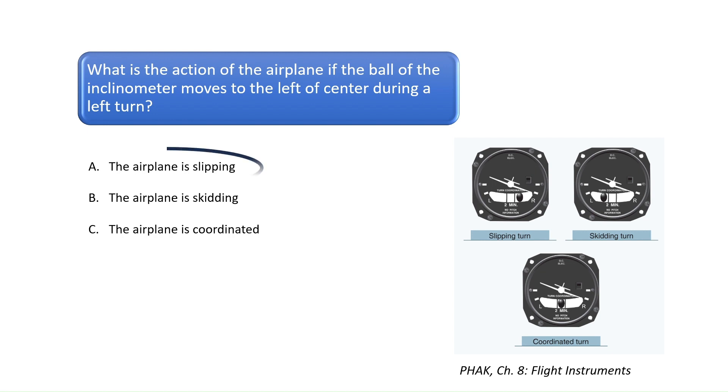The correct answer is A. The ball of the inclinometer is moving to the left during a left turn, which indicates a slip.